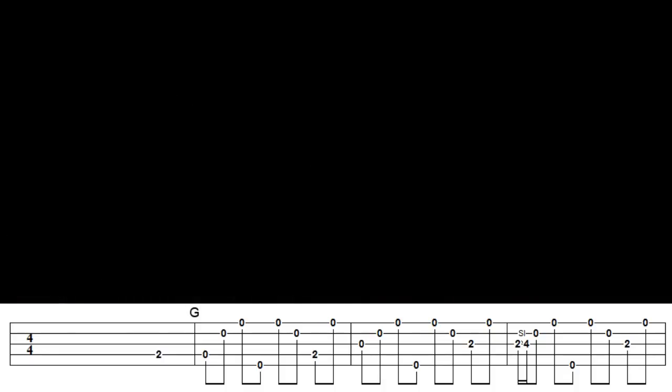Bar 2 is pretty easy, just a forward-backward roll, but fretted on the backward part at fret 2 of the G string to move the melody on. Again, practice this bar by itself, with the first bar to get it smooth.